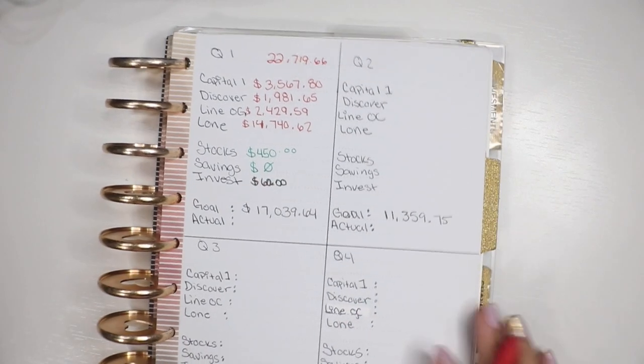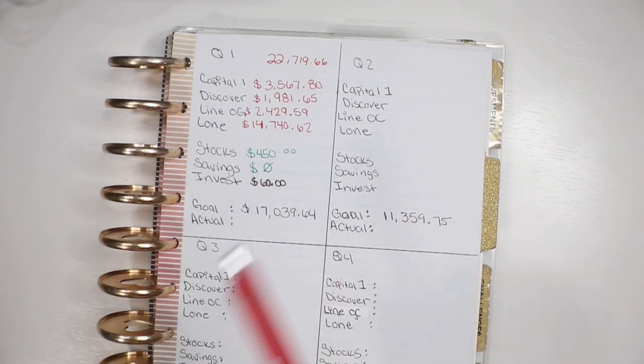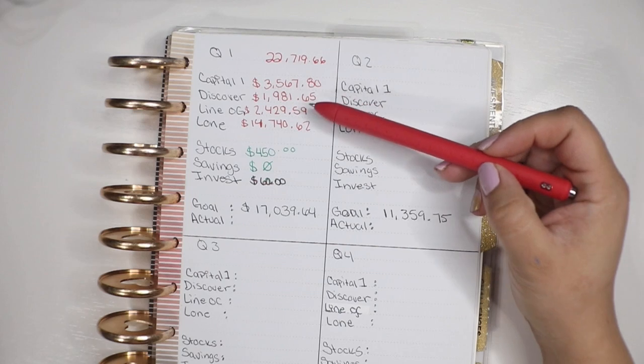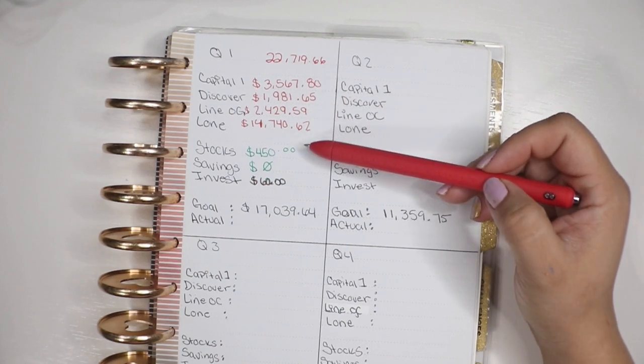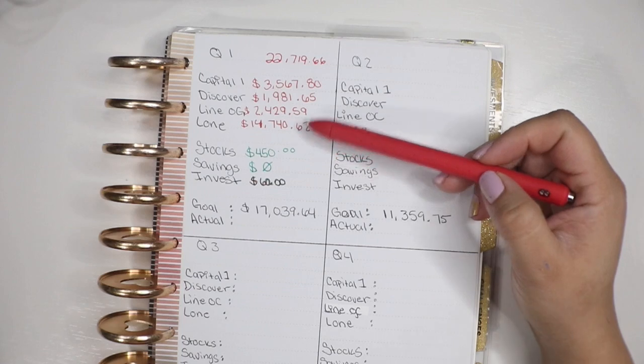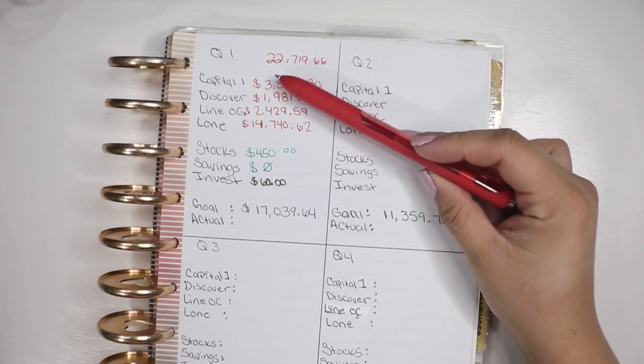We have first quarter, second quarter, third quarter, fourth. I have a Capital One, Discover, Lowe's credit, as well as a loan. Here are my beginning balances from the year. I added them all up and they add up to $22,719.66.